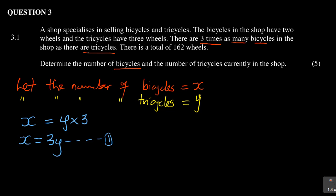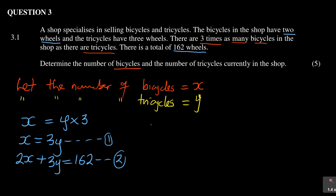The next part says there are a total of 162 wheels. The bicycles are represented by x and each has two wheels, so that gives us 2x. The tricycles have three wheels, so that gives us 3y. Combining them, we get 2x plus 3y is equal to 162. This becomes equation two.